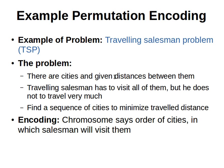Between each city and another there is a distance, a cost, or a penalty. The traveling salesman has to visit all of them without visiting the same city twice, and with the least cost or the shortest distance. So we find a sequence of cities that minimizes the total travel distance.